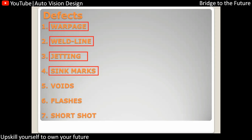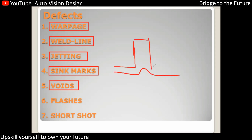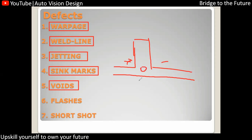Voids are a defect similar to sink mark, related to deviation in B-side root thickness — which should be 40 to 60 percent. The sink mark occurs on the class-A surface when there is a feature with excess root thickness. With voids, the depression does not appear on the outside; instead, a vacuum is created inside the part, and that is called a void.